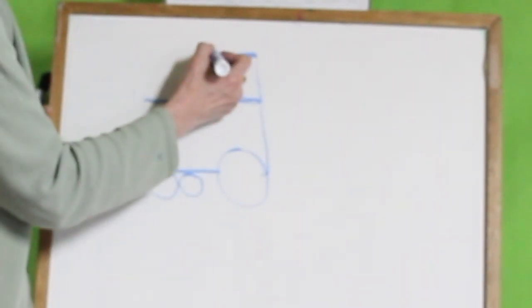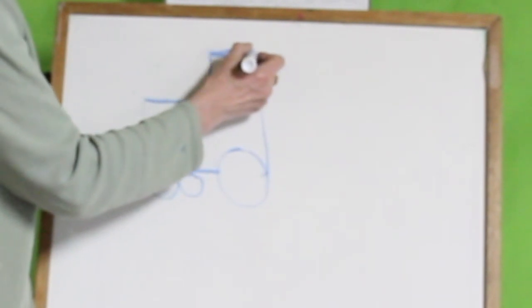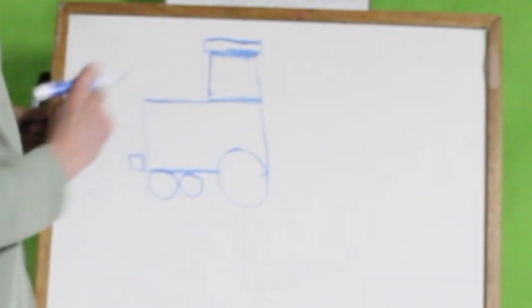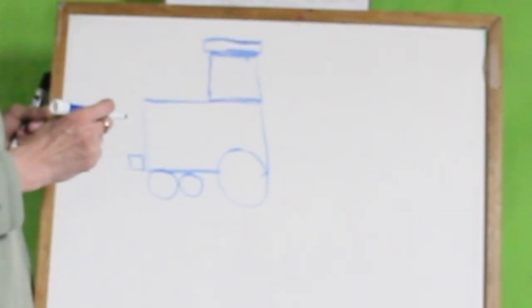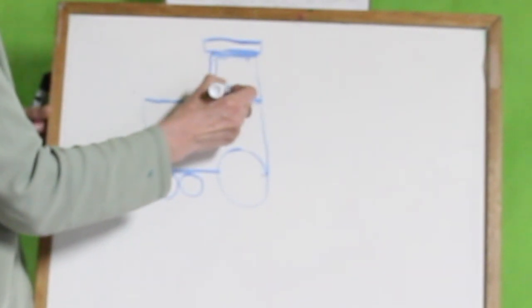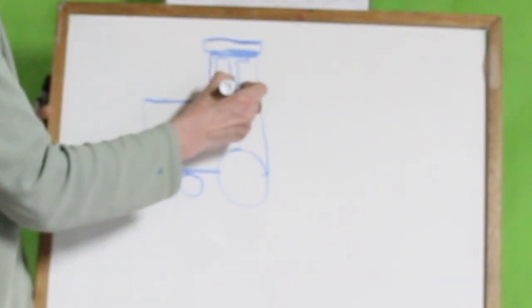Now I'm going to draw a rectangle over top of this. See how my rectangle is a little bit longer? Now I'm going to draw some windows and I'm going to draw some rectangles for my windows.